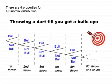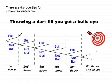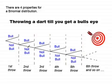The first tree diagram is that of throwing a dart until you get a bullseye. You throw the dart into the dart board — you either get a bullseye or you don't. If you get a bullseye, I stop throwing. Otherwise I carry on to my second throw, and so on. In theory, I could keep throwing forever and never get a bullseye, so this tree diagram would go on forever — it would have an infinite number of trials.